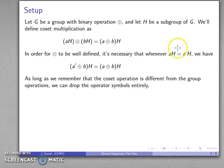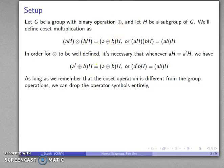As long as we remember that coset operation is different from the group operation, we don't need these operator symbols. We can just drop them out, so instead of aH coset times bH equals a group plus b H, I can just write aH bH equals abH. But it's important to remember that this is a group operation, this is the coset operation, and they are different.